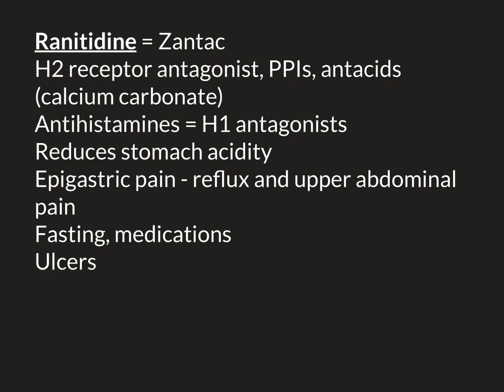If you create a drug that binds to that receptor and blocks it, stopping histamine from stimulating it, then you will stop that stimulation to produce stomach acid and reduce the production of stomach acid by the stomach cells. This is what H2 receptor antagonists do. Ranitidine is an example of an H2 receptor antagonist, and that is how it works. You would not call ranitidine an antihistamine — you would call it an H2 receptor antagonist.